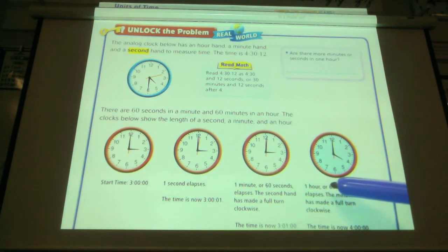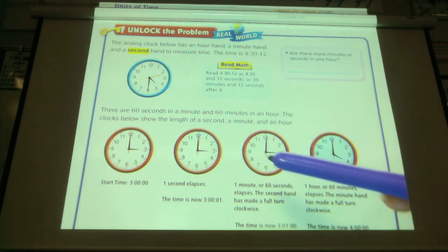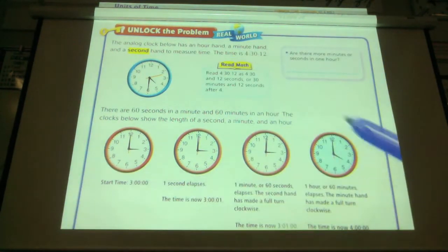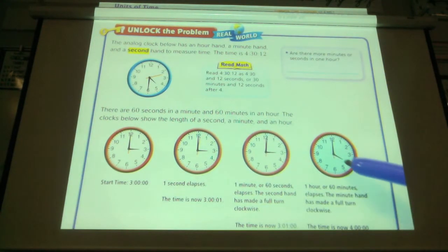When a whole hour or 60 minutes elapses, that means that the second hand has gone around 60 times to make 60 minutes. And now we have moved our hour hand is now on the four because the whole hour has passed. Okay?